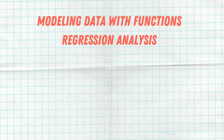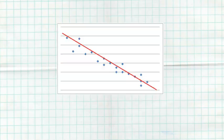In this video we're going to talk about modeling data with function regression analysis. I'm not going to go into full detail on what regression analysis is — what I'm going to show you is how to use the TI-84 calculator to do the regression analysis for you. When we model data, we're looking at a scatter plot of the data, and scatter plots can take all different types of forms.